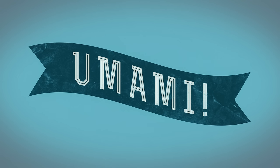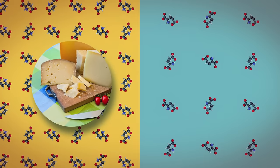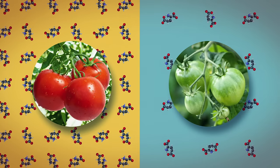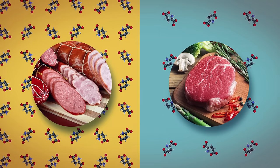And the more glutamate, the richer the flavor. Aged cheeses have more glutamate than young. Ripened tomatoes more than green. Cured meats, you get the picture.